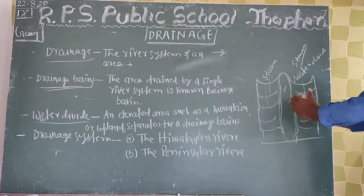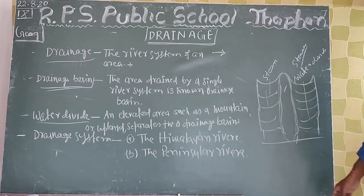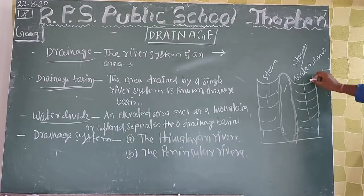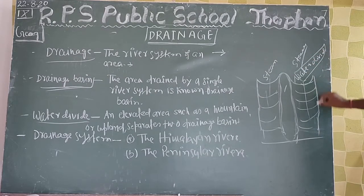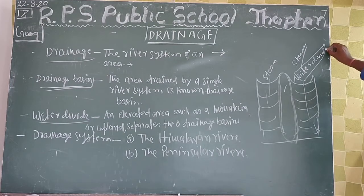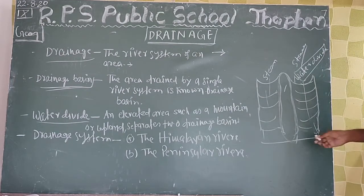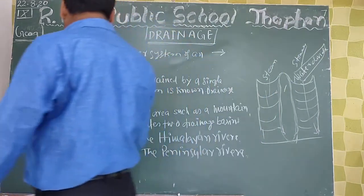The two rivers are higher than the water. The water is divided by the water — it is higher than the water, divided by the water — of the key drainage system.